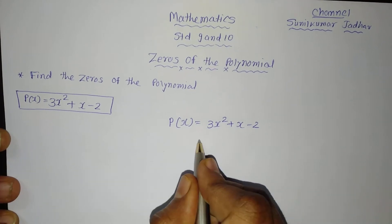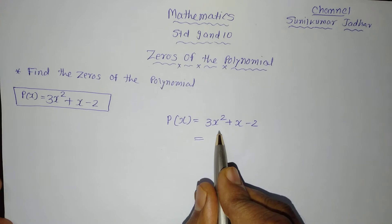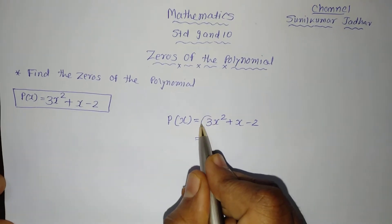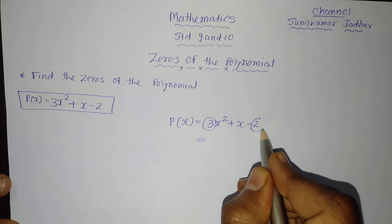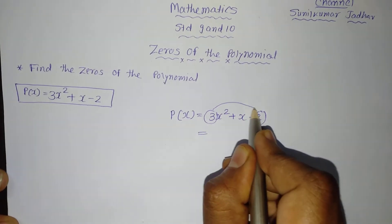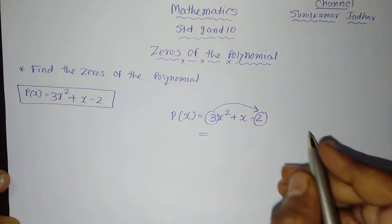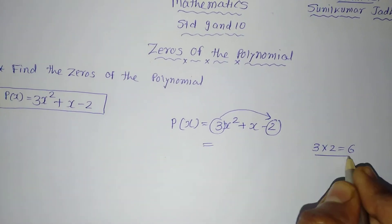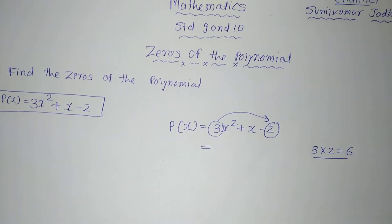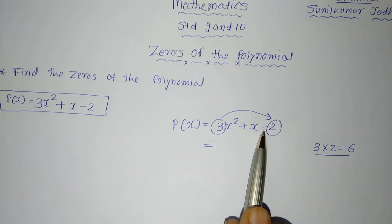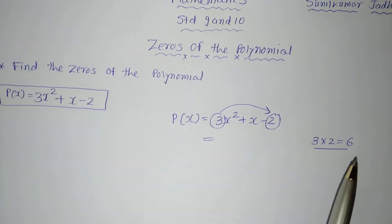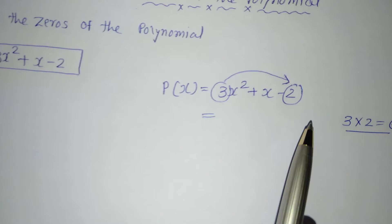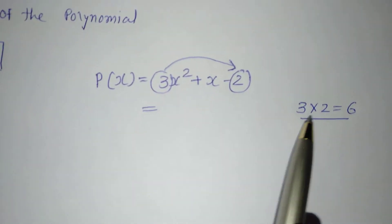Let us move. First of all we will try to factorize this. For factorization, we need to take the coefficient of x², which is 3, and the constant term, which is 2, and multiply both of them. So 3 into 2 is equal to 6.